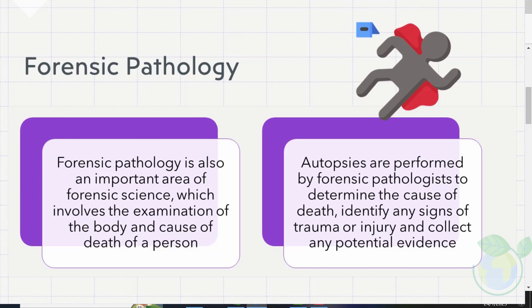Forensic Pathology is also an important area of forensic science, which involves the examination of the body and cause of death of a person. Autopsies are performed by forensic pathologists to determine the cause of death, identify any signs of trauma or injury, and collect any potential evidence.